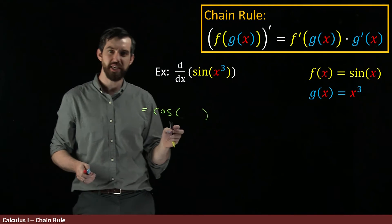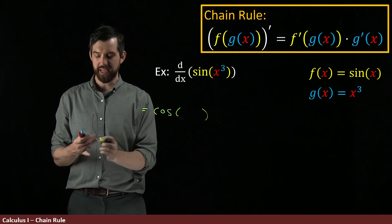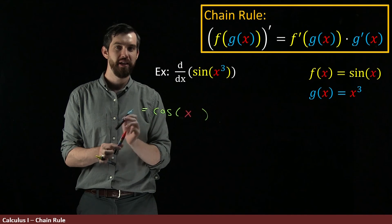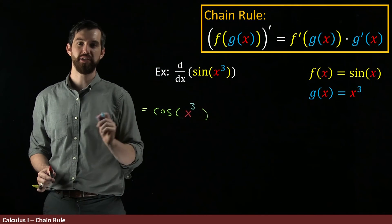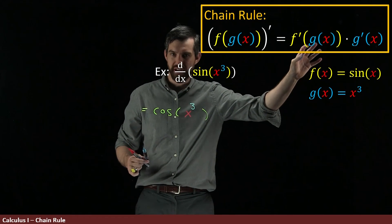But in this case, the argument that g of x is going to be is this x cubed. So I can put that in. I've got my variable, which is x, and then I'm going to be cubing it. So this is cosine of x cubed.